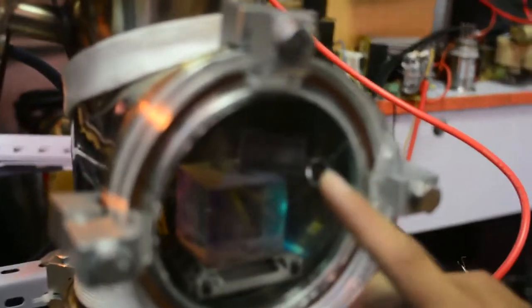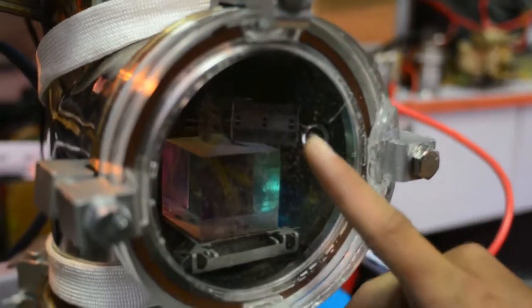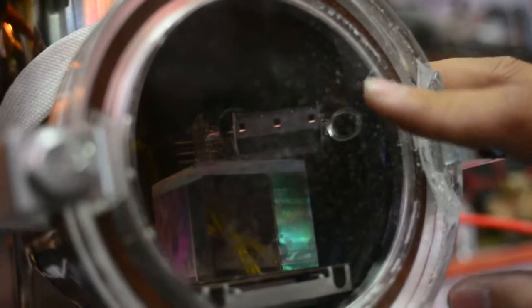You can see this vacuum tube is hooked up to the low voltage vacuum connector cable. I will apply a DC voltage to this filament.